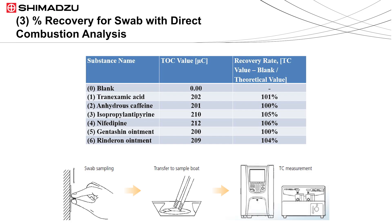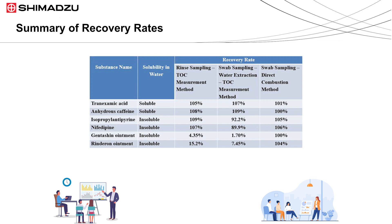Shown here is the summary of recovery rates. Column one is the substance name, column two is the solubility in water, and columns three, four, and five are the recovery rates for the rinse sampling method, the swab sampling with water extraction, and the swab sampling with direct combustion method respectively. From the fifth column, all recoveries are around 100%. The swab direct combustion method is clearly the best cleaning validation technique among all analytical methods, as well as the best TOC method.